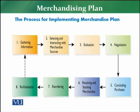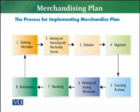What retailers do first, before making any plan, is gather some information. After gathering this information, the second step is to select and interact with the merchandising sources. Moving to the third step, you evaluate all these things. After evaluation, the fourth stage of negotiation comes — negotiating with the suppliers. For example, if it is an XYZ product, you are going to negotiate for it.